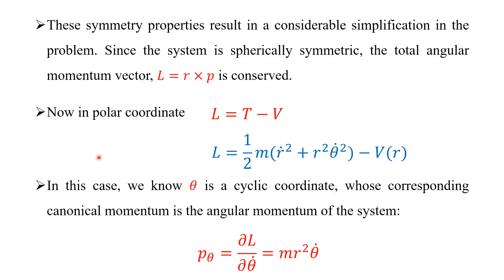The Lagrangian is equal to the difference between the kinetic energy and the potential energy. In the polar coordinate system, the kinetic energy is one-half m times (R-dot squared plus R squared theta-dot squared), minus the potential V of R.